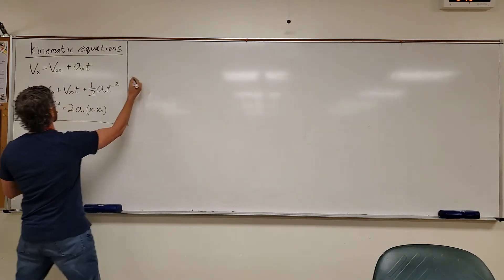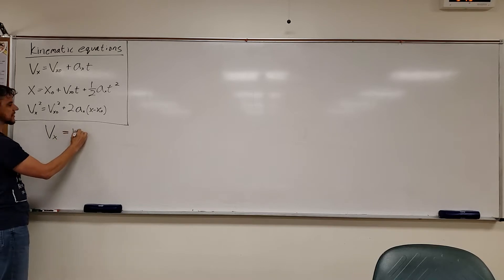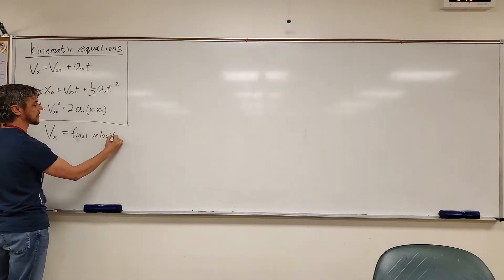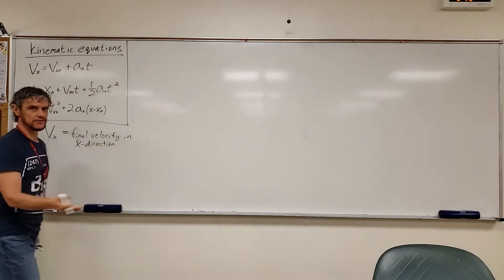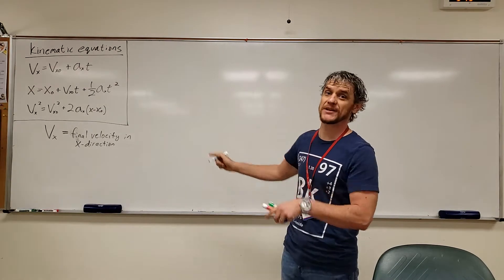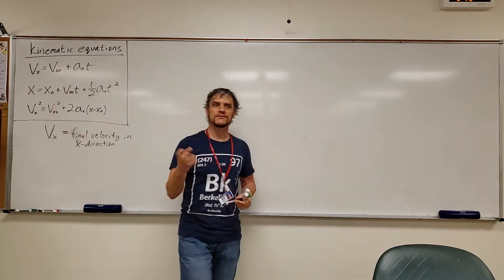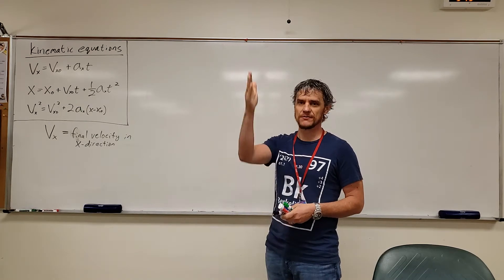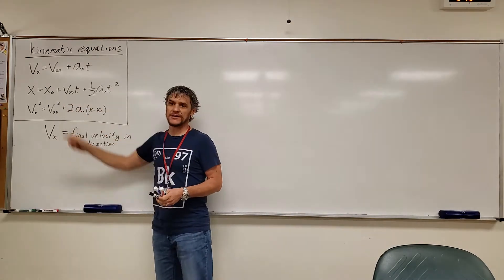Let's list our variables. The first variable in kinematic equation number one is V with a subscript X, which means final velocity — specifically in the X direction, meaning horizontal motion. The subscript X is used whenever we study motion in the X direction. When we study freefall (vertical motion), we replace those subscripts with Y's, but on the formula sheet they are given as X's.